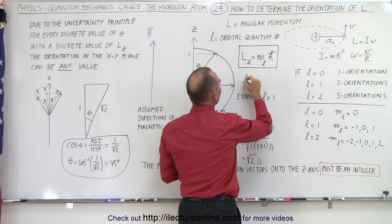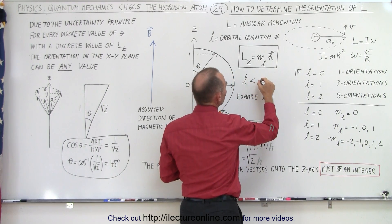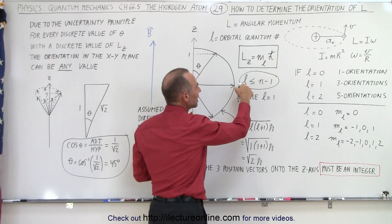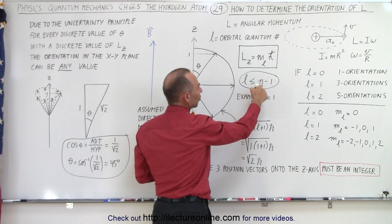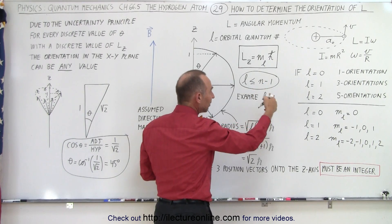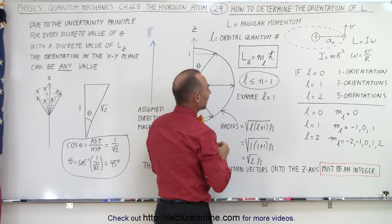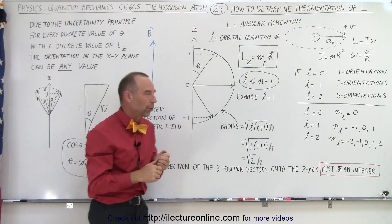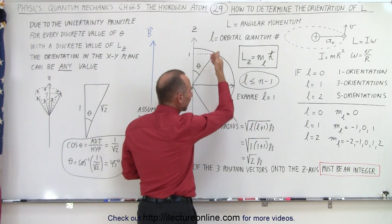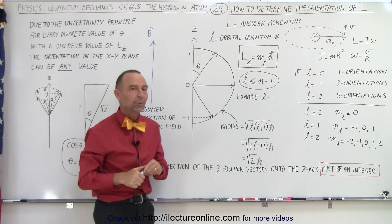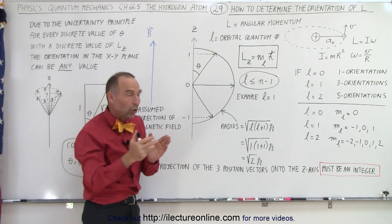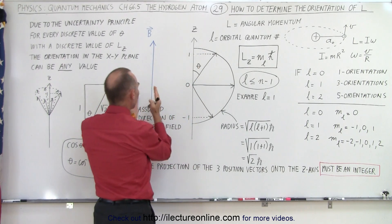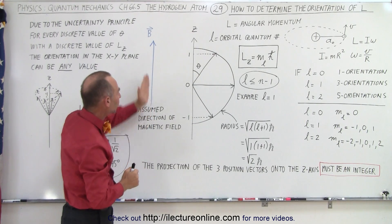Remember that the value of L had to always be less than or equal to N minus 1. So depending upon what the principal quantum number is, the orbital quantum number is determined — it's always going to be one less than N. Depending upon the value of L, we'll have different orientations that we can calculate. We're going to take the example where L is equal to 1 and calculate the various orientations that the angular momentum can have, when we place the atom inside the influence of a magnetic field.